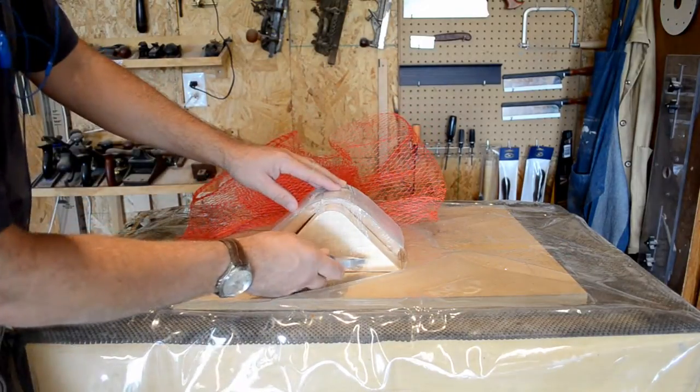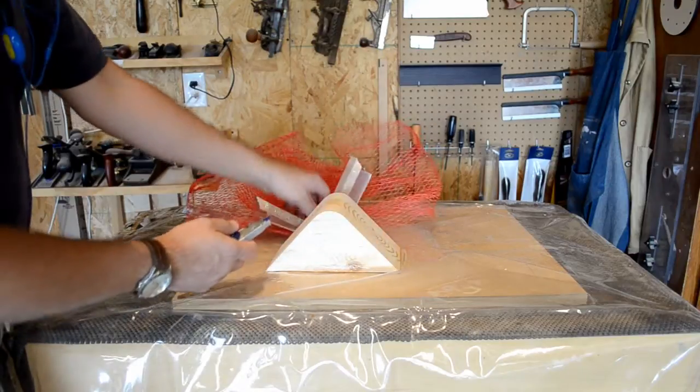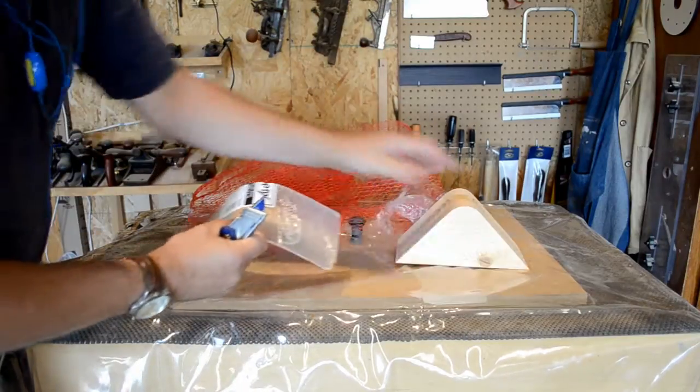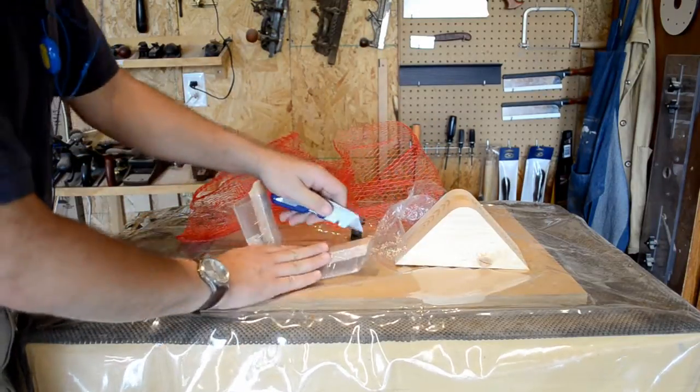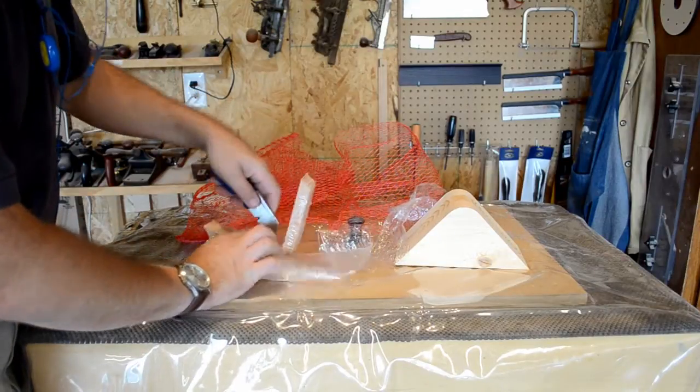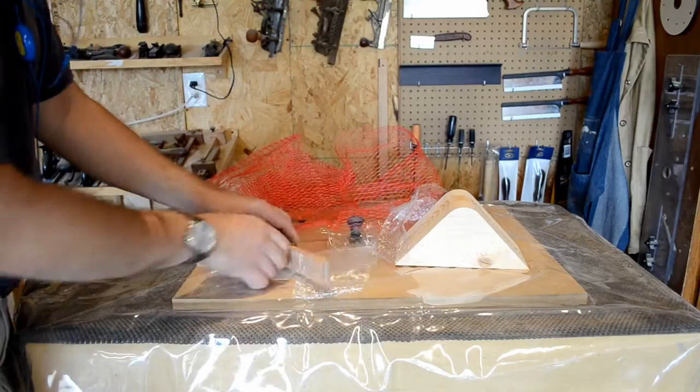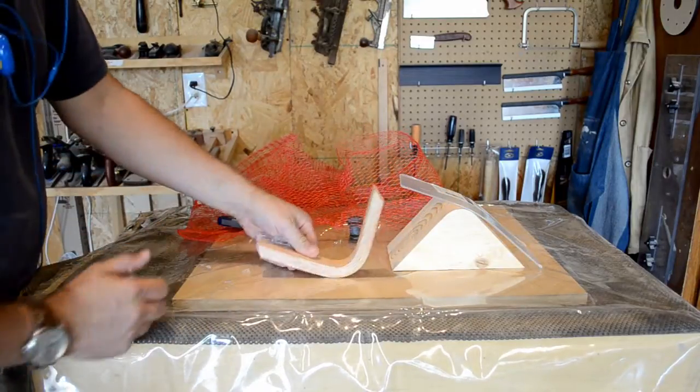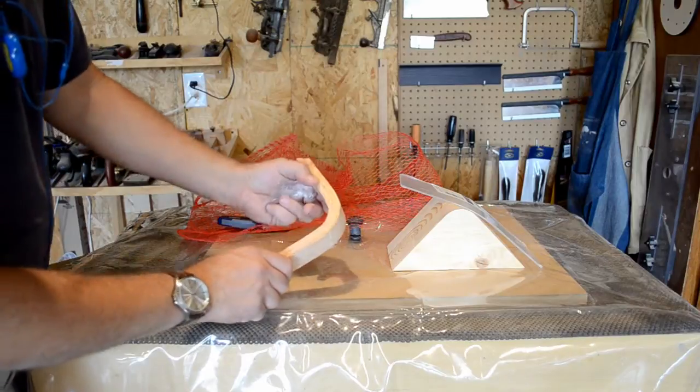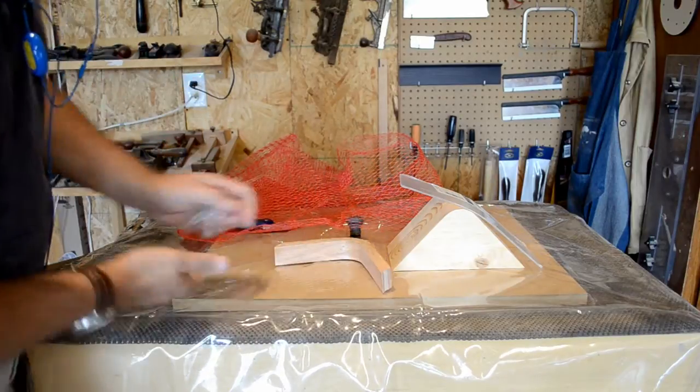Like any form of wood forming, a certain amount of overbend has to be built into your form to allow for the spring back that inevitably comes when you release the part. Using more thinner laminations not only means less spring back, but also means it's easier to form the parts, especially in a deep draw like this one.